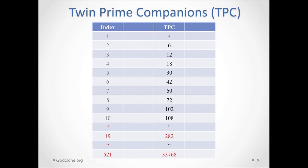Here again you tabulate them, and these indices follow the same indices as twin primes, because this number is always sandwiched between a pair of twin primes. The 19th TPC is 282, and the 521st is 33,768.